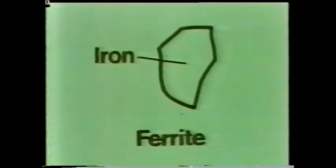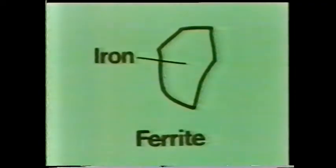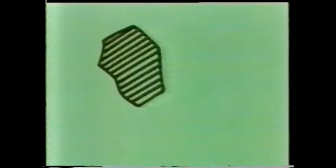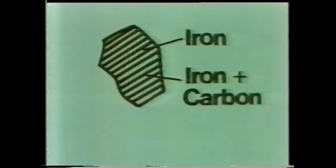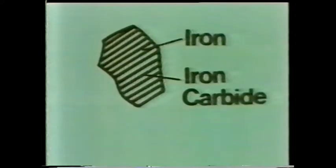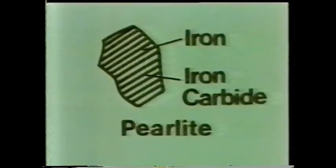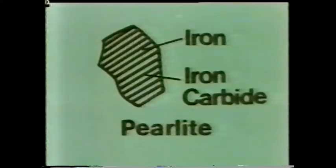These give steel the property of ductility. The other grains, like this one, are made up in layers. The white layers are iron. The black layers are a chemical compound of iron and carbon, called iron carbide. Pearlite is the name given to this type of grain. They give steel the properties of hardness and strength.